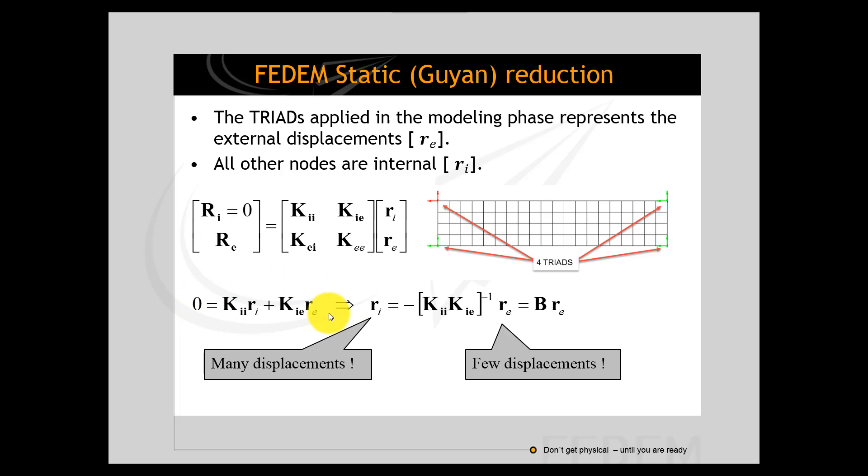This gives you the influence matrix B and the columns of the influence matrix are actually the static modes that you are using to calculate the internal displacements when the external displacements are known from the dynamic simulation.